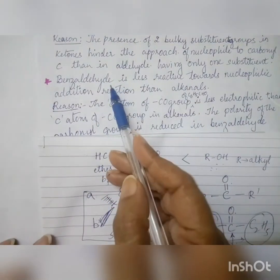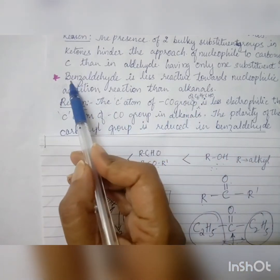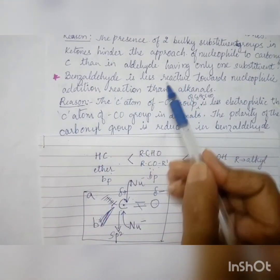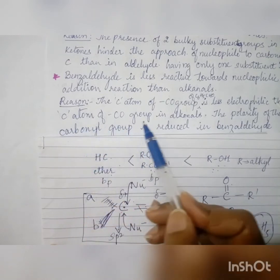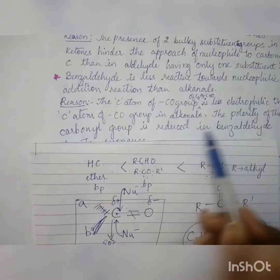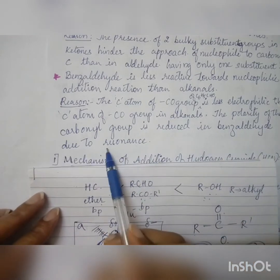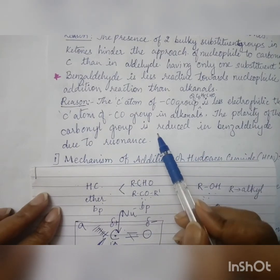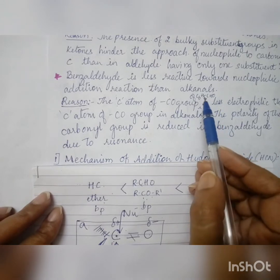Benzaldehyde is less reactive towards nucleophilic addition than alkanals (aliphatic aldehydes). This is because the carbonyl carbon of benzaldehyde is less electrophilic than that of an alkanal. Additionally, the polarity of the carbonyl group is reduced in benzaldehyde due to resonance. For these two reasons — reduced electrophilicity and reduced polarity — benzaldehyde is less reactive than aliphatic aldehydes.